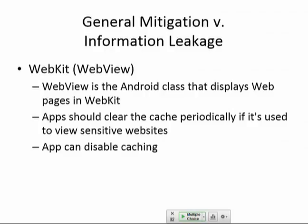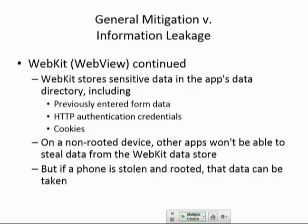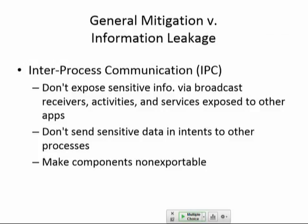WebKit is the active ingredient of the browser on your phone. It renders pages and also caches things. The cache contains fragments of what you've been typing in previous web pages, so it would be a good idea to either disable caching for things like login screens or clear the cache periodically. On a non-rooted device, only the browser can steal that, but if the phone is stolen and rooted, anybody can get it. There's also interprocess communication: broadcast intents and services can carry sensitive data — you should not be putting sensitive data in those things.